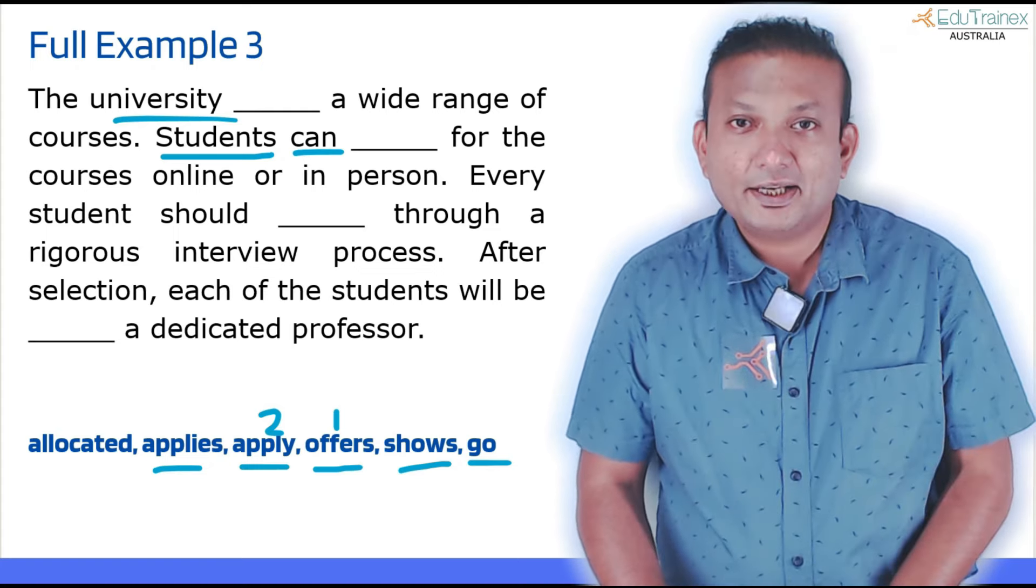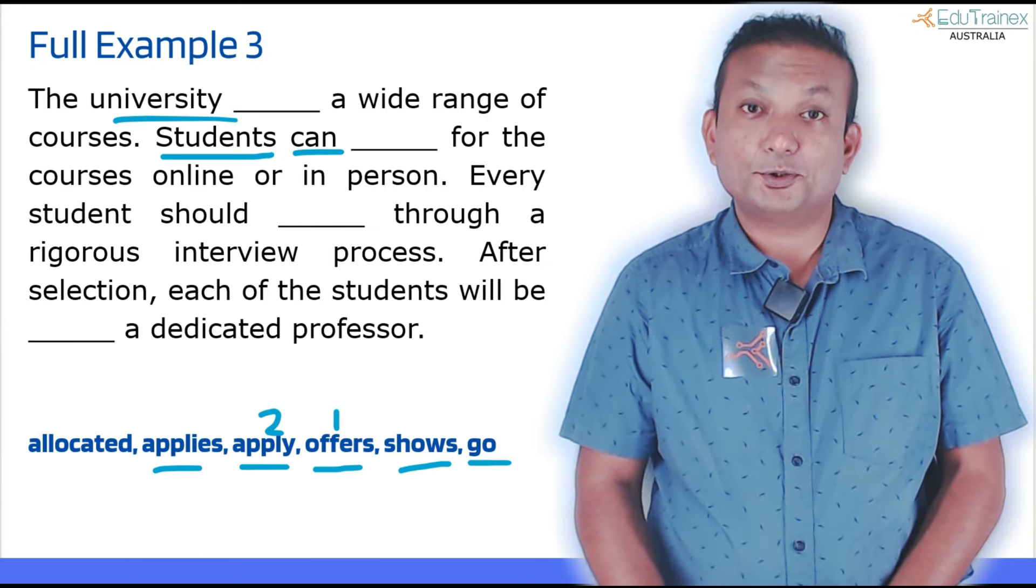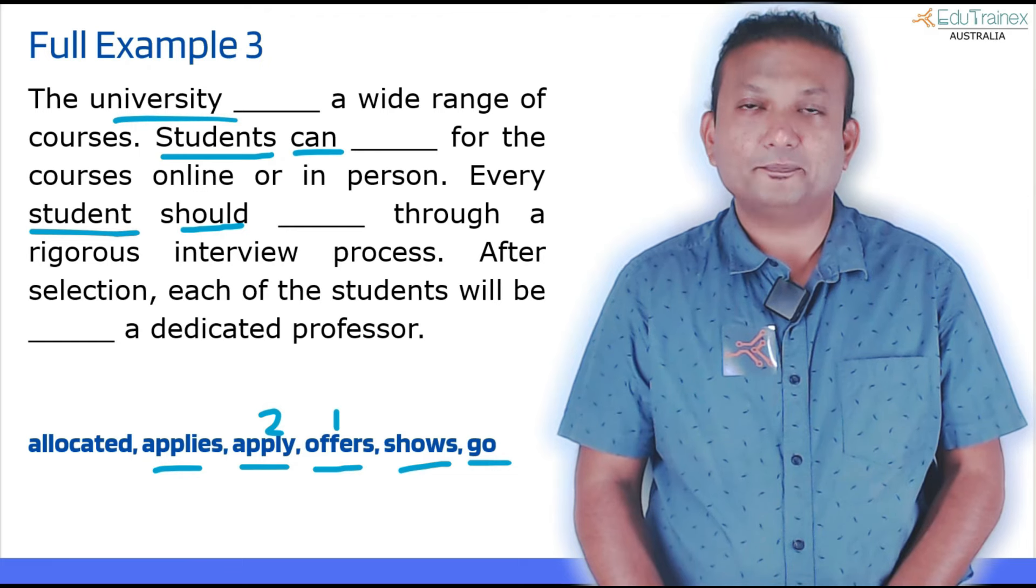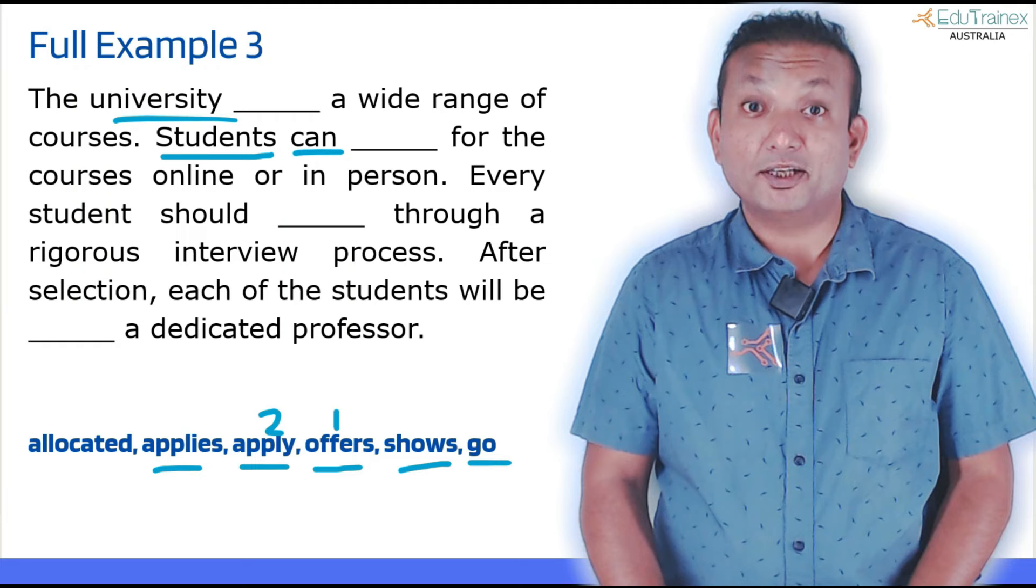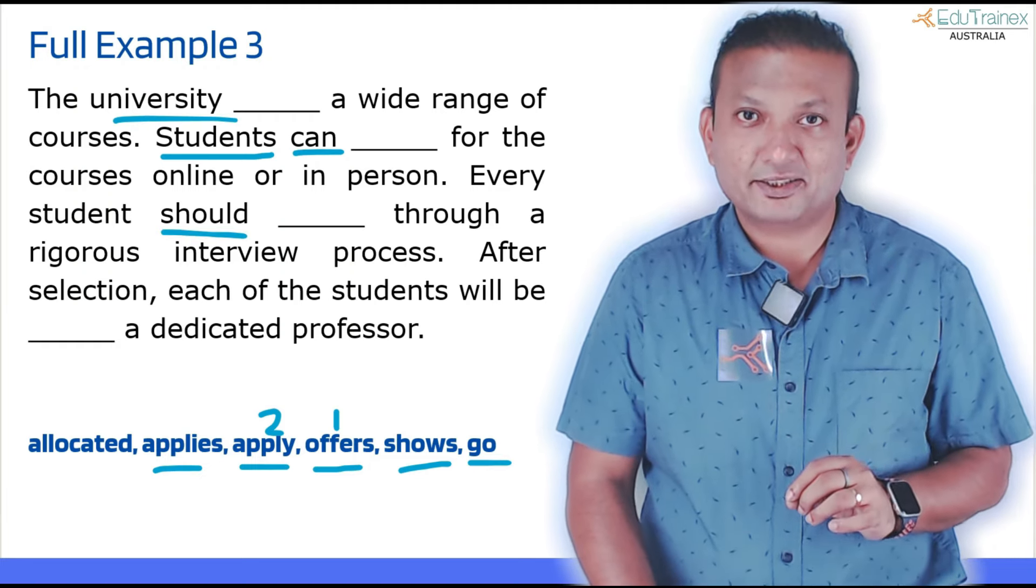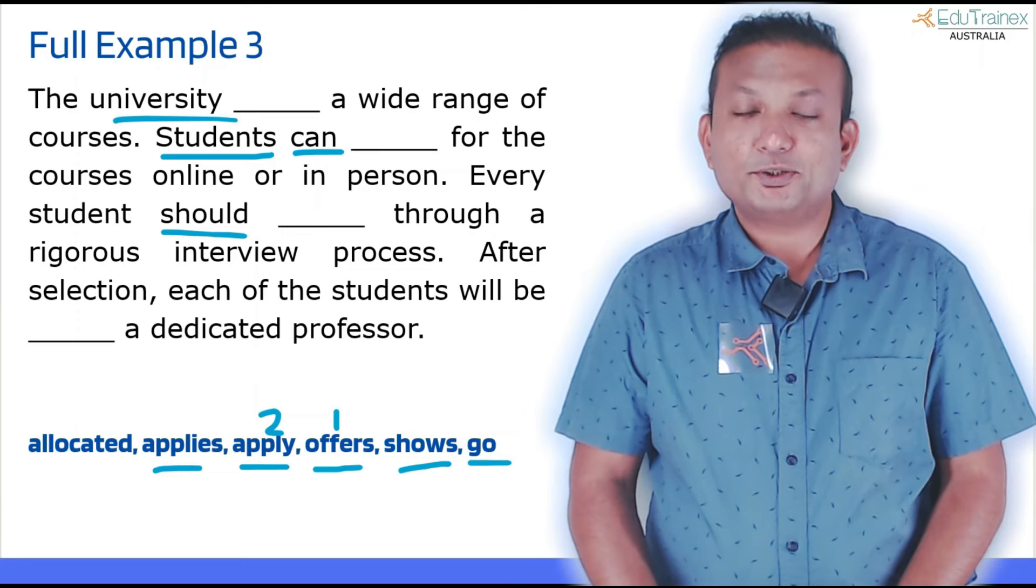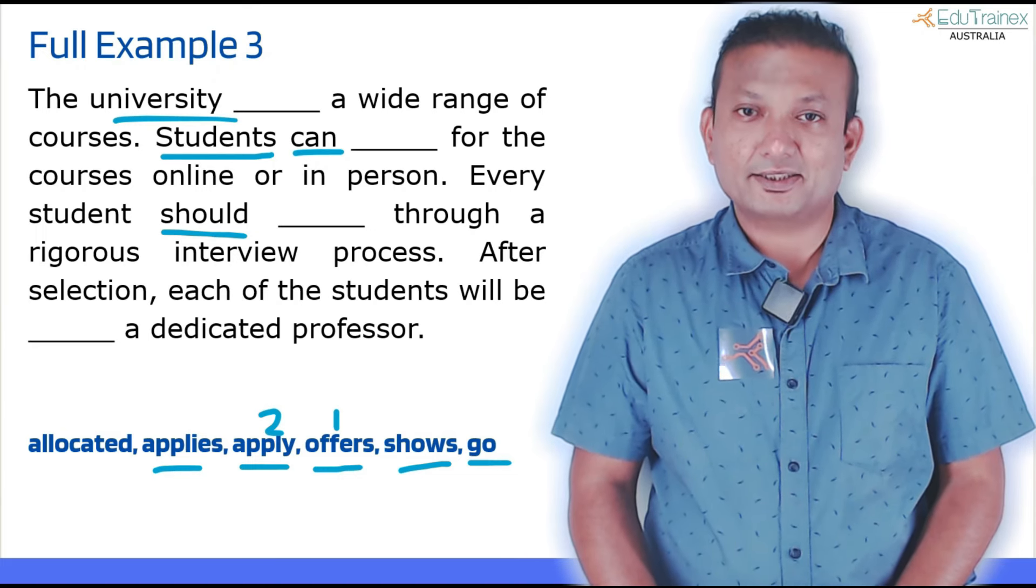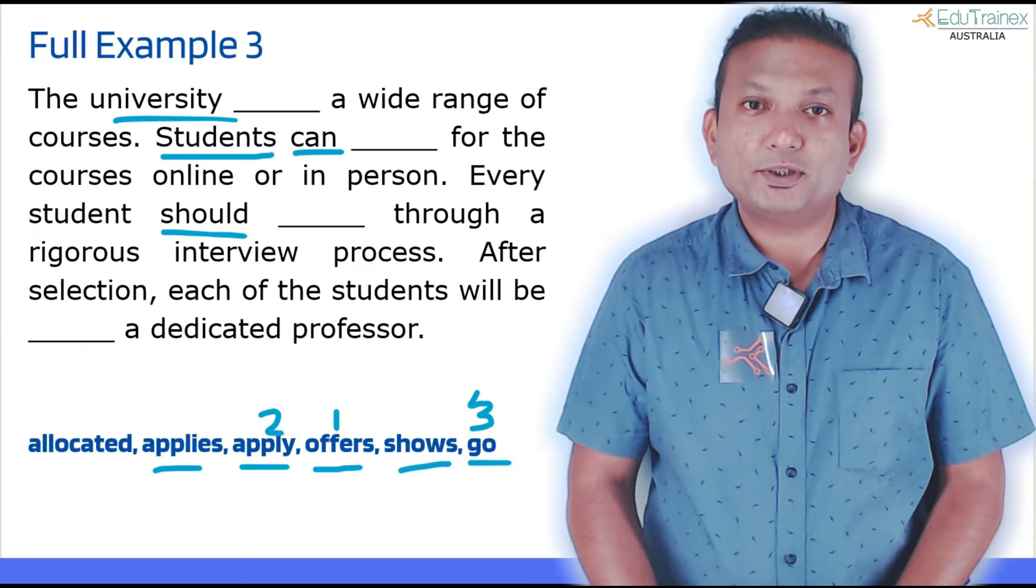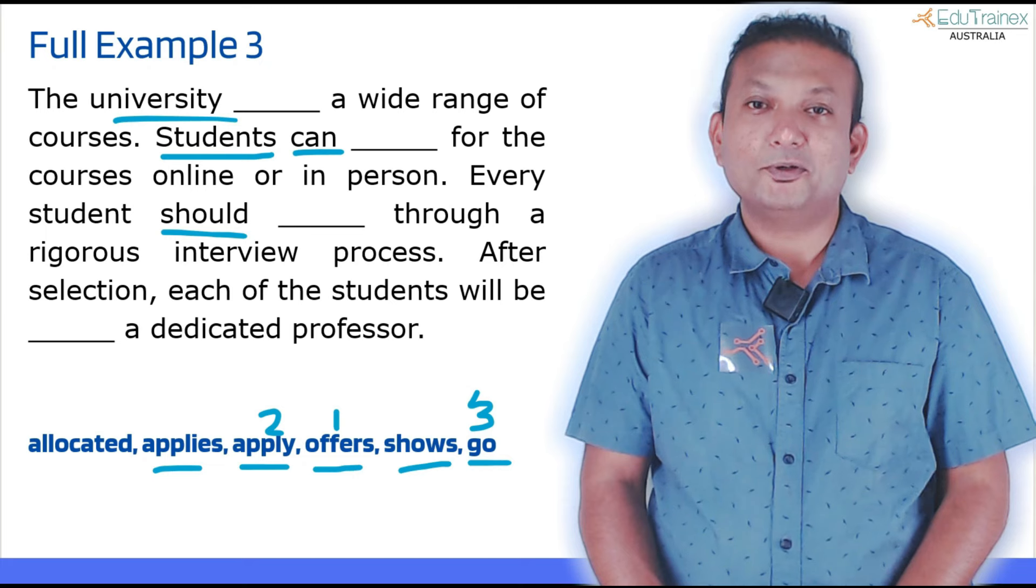Every student should blank through a rigorous interview process. Should, and student is singular, so what will come? Every student should... Next one is 'every student should blank.' Should what will come next? Verb one. How many verb ones do we have remaining? 'Shows' and 'go.' Every student should shows? No. Every student should go? Yes, that makes sense here. So that will be our third answer. And every student is plural here, so that's why we have a singular verb. Again, the second technique helps you to find out the correct answer.